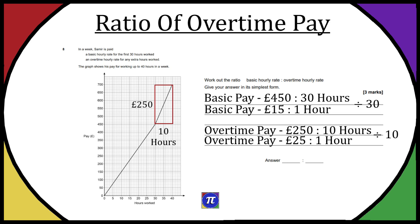So we've got the hourly rate for basic pay and the hourly rate for overtime pay. Working out the ratio, we give the basic hourly rate on the left — that's the form they want. So 15 and then 25 on the right, because that's the ratio to overtime pay. We can divide both sides by 5 because it asks us to give it in its simplest form. So 15 divided by 5 is 3, and 25 divided by 5 is 5. So we've got a ratio of 3 to 5.